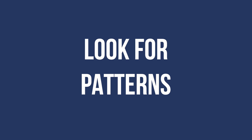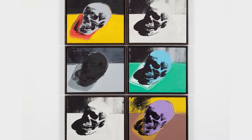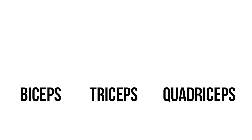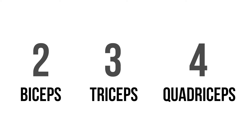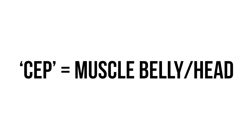Next, look for patterns. Anatomists can be lazy. If we find a good name for one thing, we sometimes just copy and paste it with slight tweaks. Finding these patterns can help you work out what the words mean. For example, look at biceps, triceps and quadriceps. We have two, three and four sets, whatever they might be. If we look at those muscles, we can see that they're composed of multiple muscle bellies or heads — biceps have two, triceps have three, and quadriceps have four. So the word ceps must relate to muscle bellies.